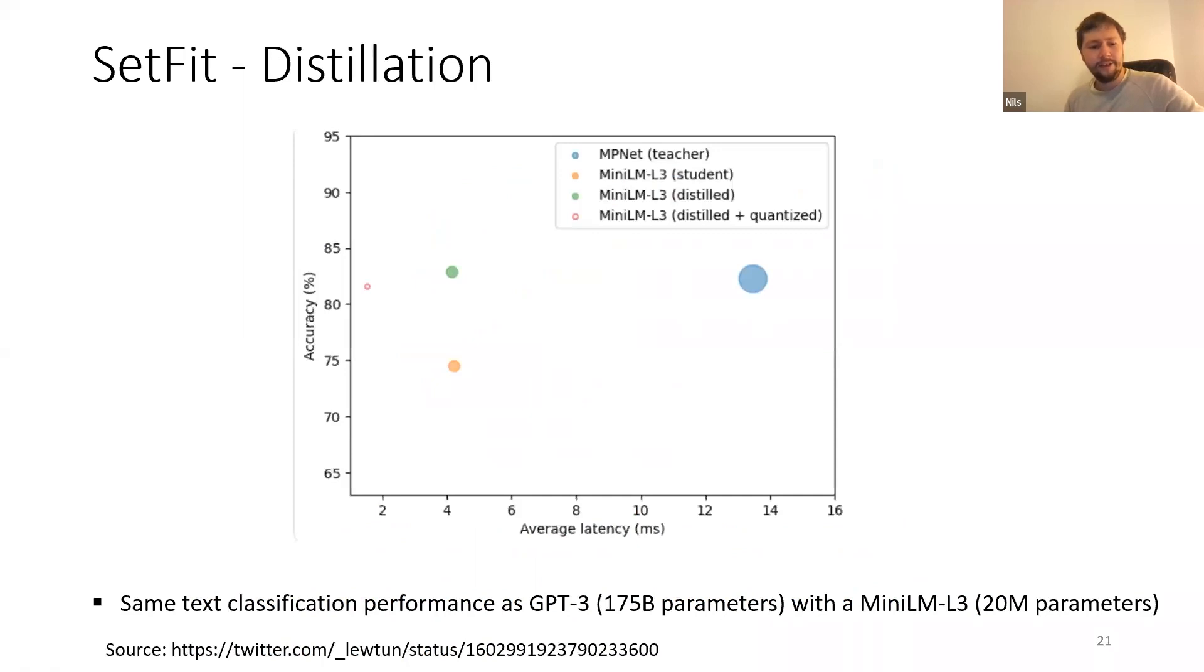And there's a cool talk from Lewis on YouTube just posted a few days ago where they present distillation approaches. So you start with an MPNet, which is a BERT base size model 100 million parameters. And then they distill it to a MiniLM three layer network. And as you see, the performance is roughly the same.